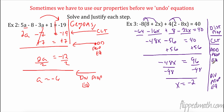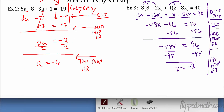Now I'm actually solving my equation. I had subtraction and multiplication, so I had to add to the other side and got 96. Then I divided by negative 48 and got negative 2. Those steps used the addition property of equality and the division property of equality.